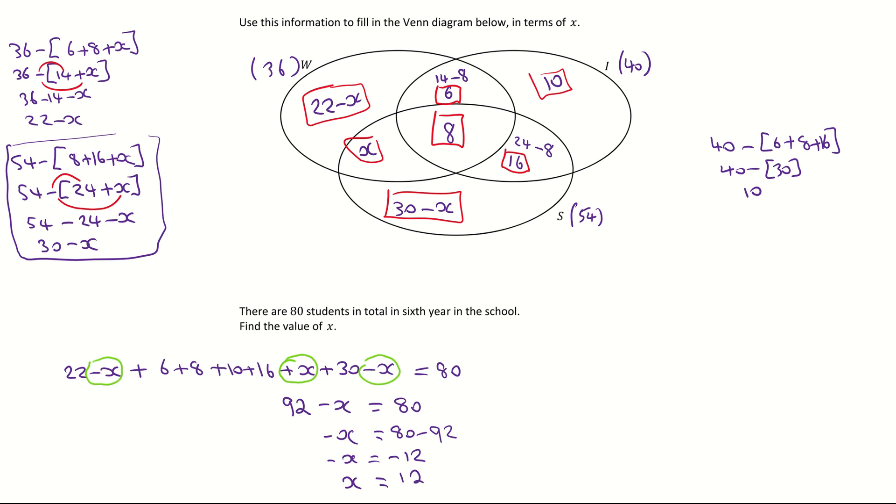And that is the value of the missing letter X. So in this question, we've looked at how to fill in the Venn diagram and find that missing term. And the main things to take away from it is, like I said at the start, start by always filling in the intersection if you can. Secondly, then fill in the missing letter and then go from there.